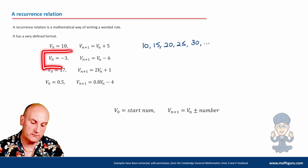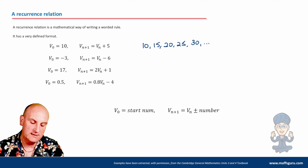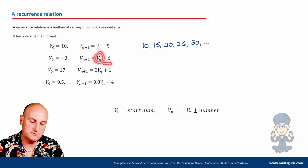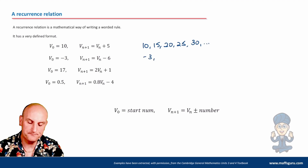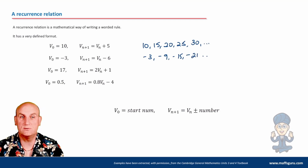V₀ equals minus 3, so my start number is minus 3. To get to my next term, take my current term and subtract 6. That gives: minus 3, minus 9, minus 15, minus 21. There's my sequence.